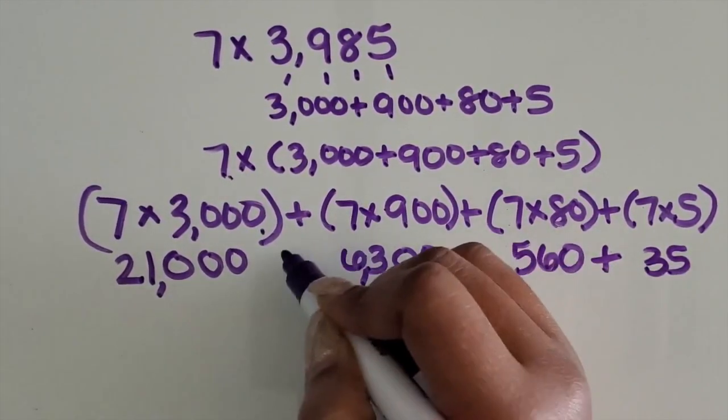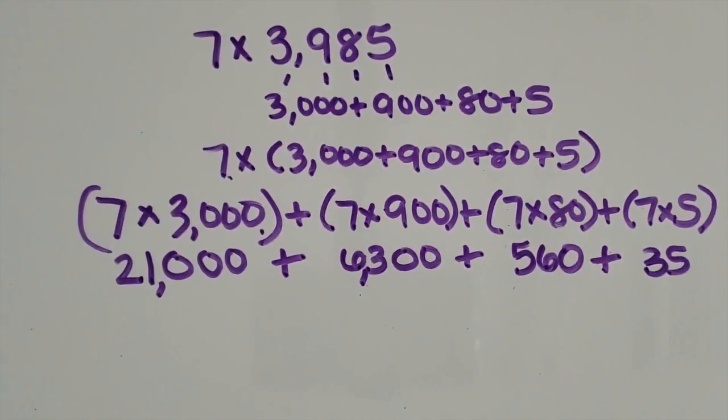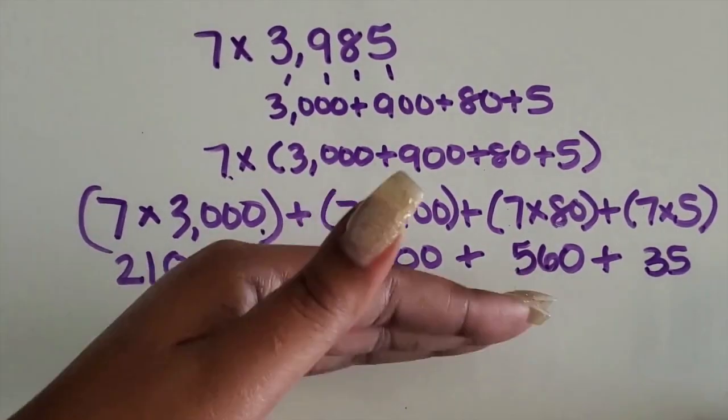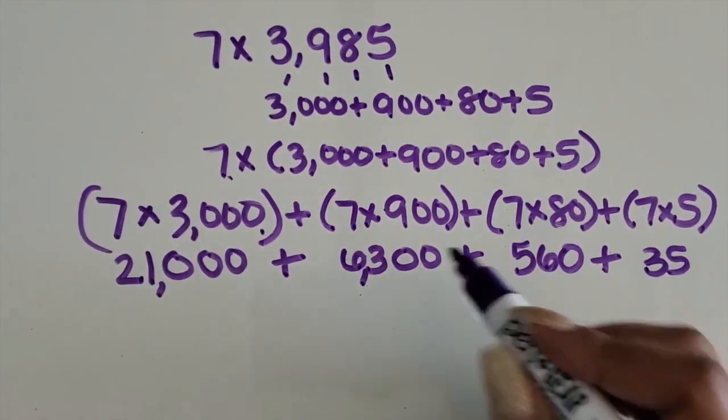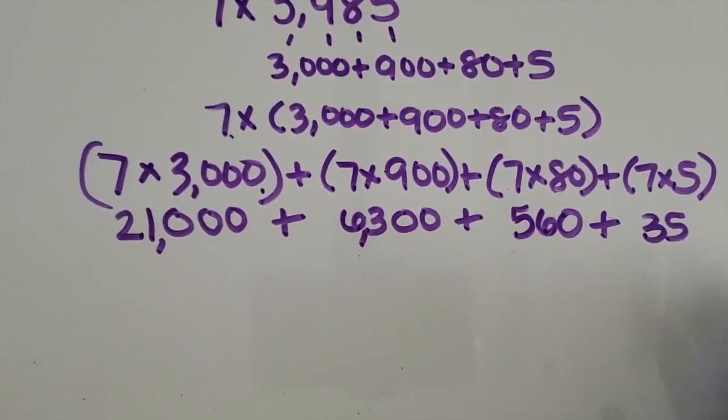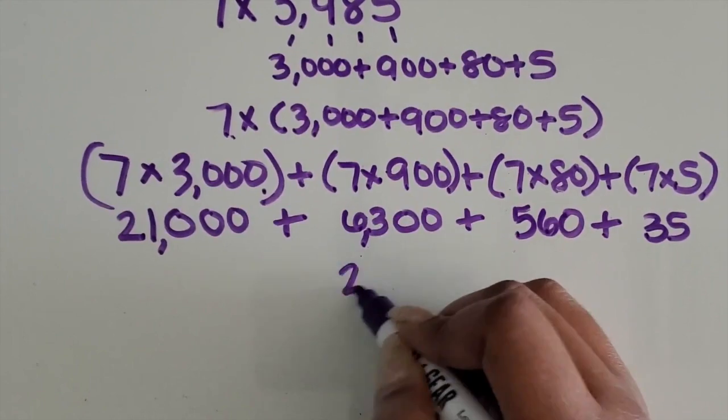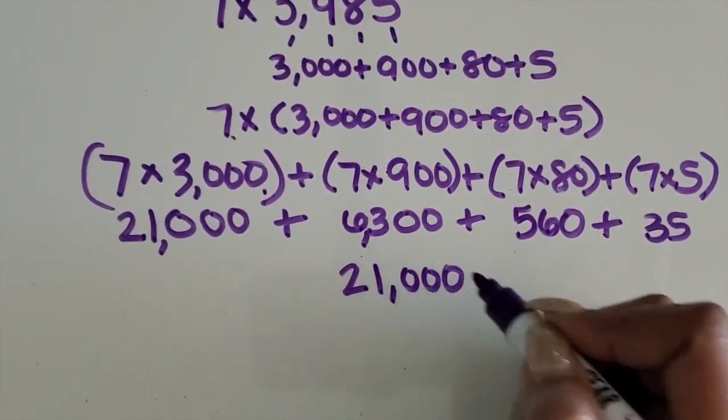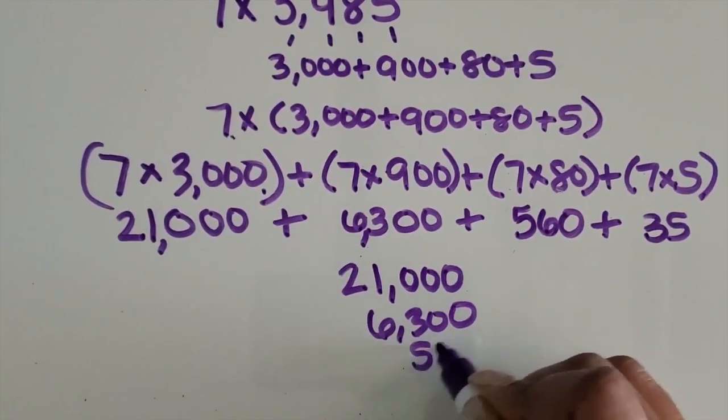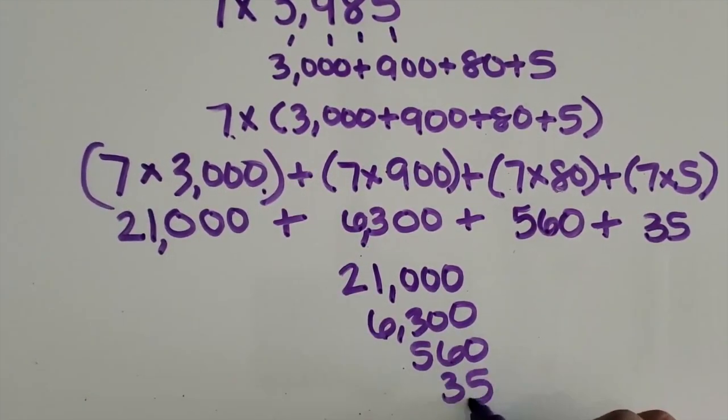So we're adding all of those products or partial products back together. And once it gets to all of these different products, I might have students line them up below so that they're adding correctly. If at this point they can't do it mentally, starting with the 21,000, then 6,300, 560, and 35.